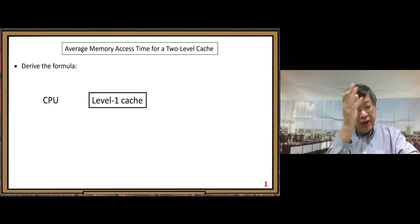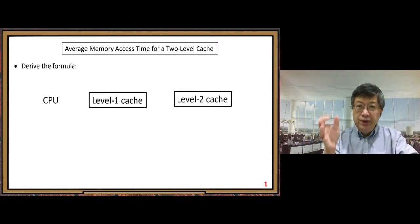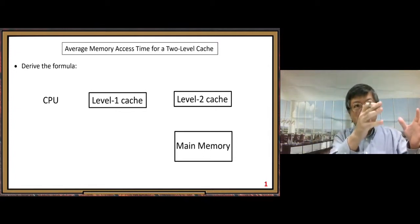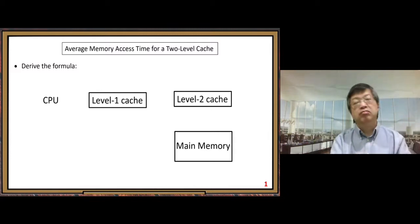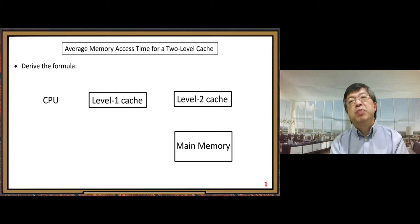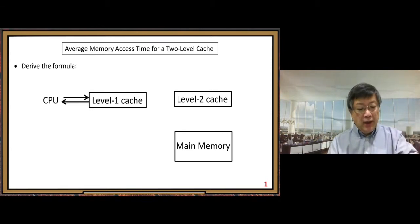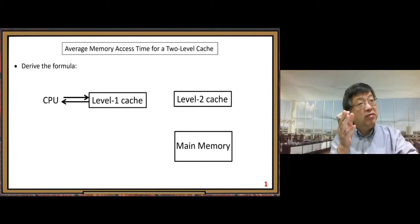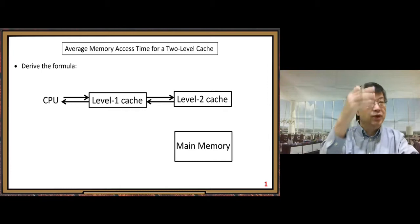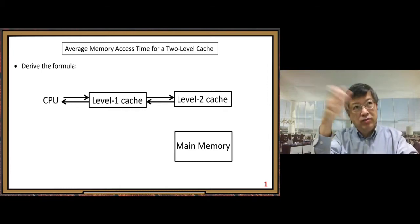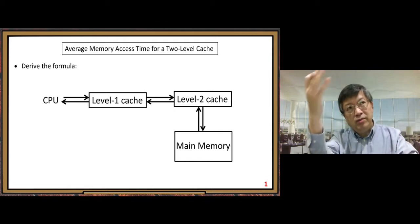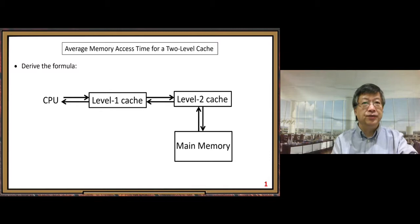Starting from the CPU, then level one cache, level two cache, and the main memory. Between CPU and level one cache we have certain numbers. Between level one and level two we have hit time and miss rate. Between level two and main memory we also have hit time, miss rate, and miss penalties.